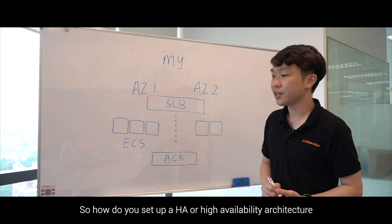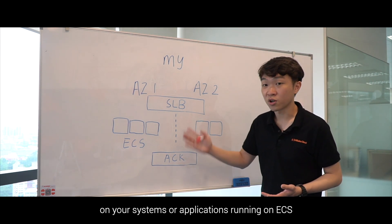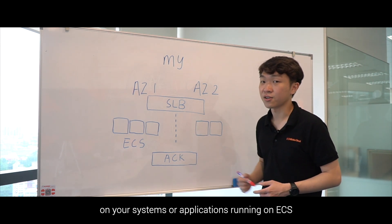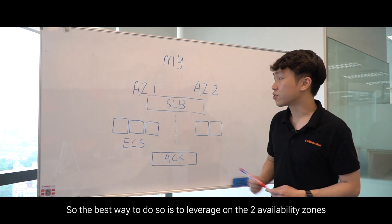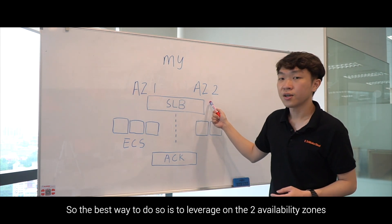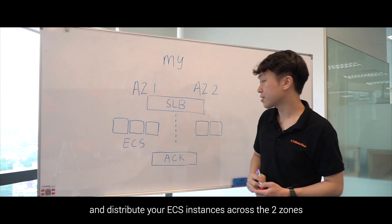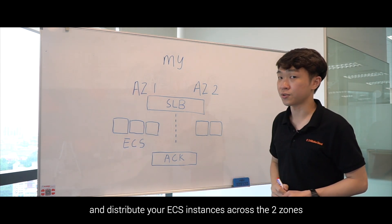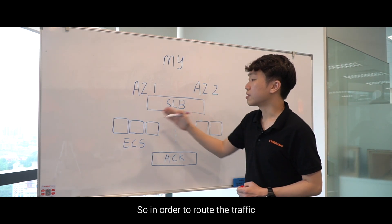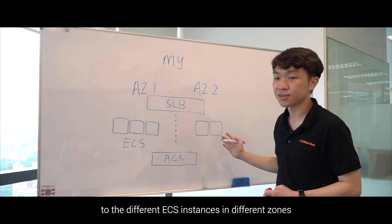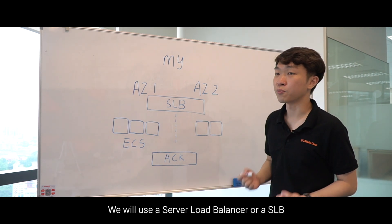How do you set up a high availability architecture on your systems or applications running on ECS? The best way is to leverage the two availability zones here in Malaysia and distribute your ECS instances across the two zones. In order to route traffic to the different ECS instances in different zones, we will use a Server Load Balancer, or SLB.